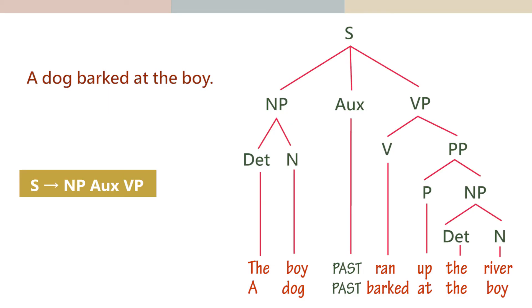Sentence is noun phrase, auxiliary, verb phrase. This is a generic rule. The noun phrase is determiner noun. Verb phrase, V prepositional phrase. Prepositional phrase, preposition followed by noun phrase. Again, we have a noun phrase at the end, which is determiner noun. But because we already wrote the rule here, we don't write it here again.